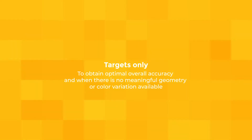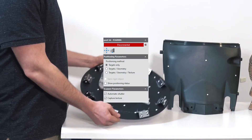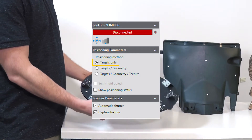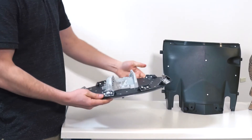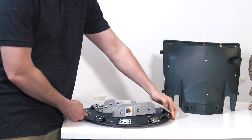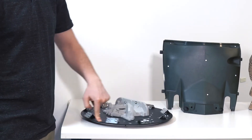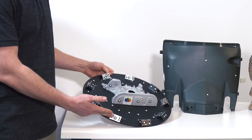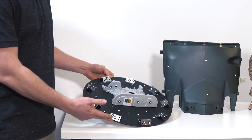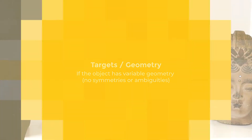In this video we're going to talk about the methods the scanner uses to position itself. The first one is targets only — you place targets on or around the object, and you can even use raised object target holders. It uses solely the targets to relate itself to its position to the scanned object.